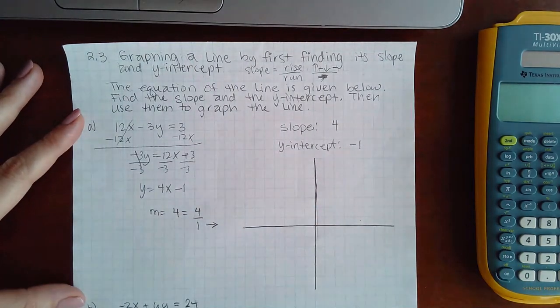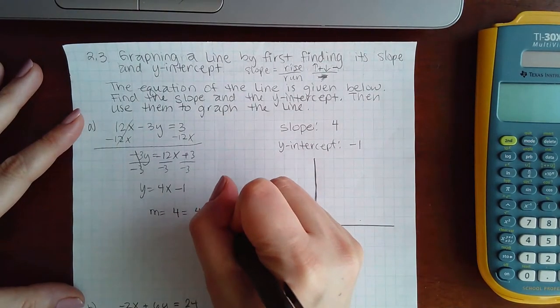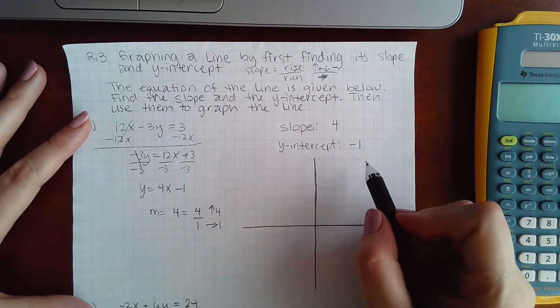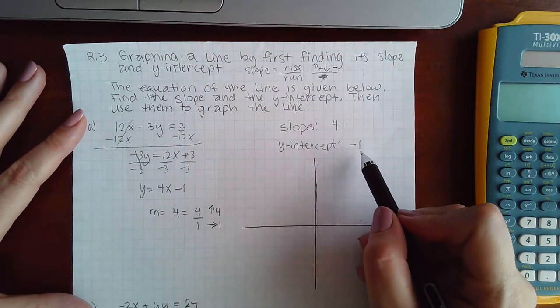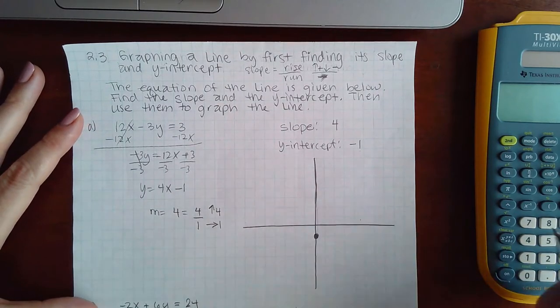Because it's a positive 4, I'm going to go up four units. So where do we start though? You start at your y-intercept, so my y-intercept is here at -1.